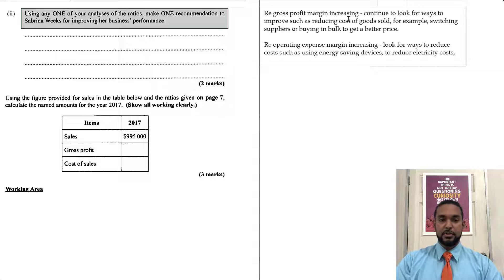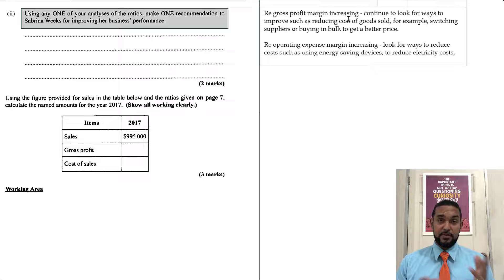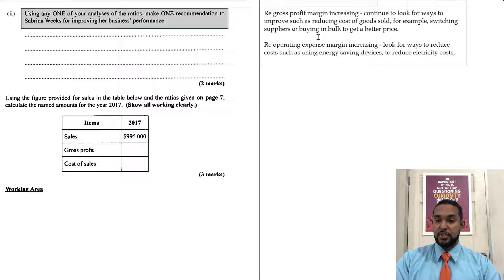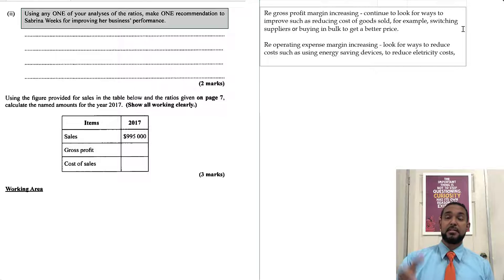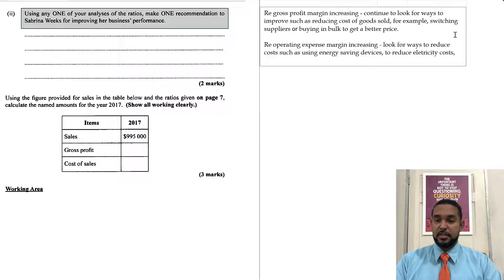Regarding the gross profit margin: to improve the business's performance, the gross margin needs to increase. Think about it — gross margin is gross profit as a percentage of sales. You'd like that percentage to be higher. For it to be higher, you either make more revenue or reduce your costs. So continue to look for ways to improve, such as reducing cost of goods sold — for example, switching suppliers or buying in bulk to get a better price. You don't have to go overly fancy; you could come up with different reasons.